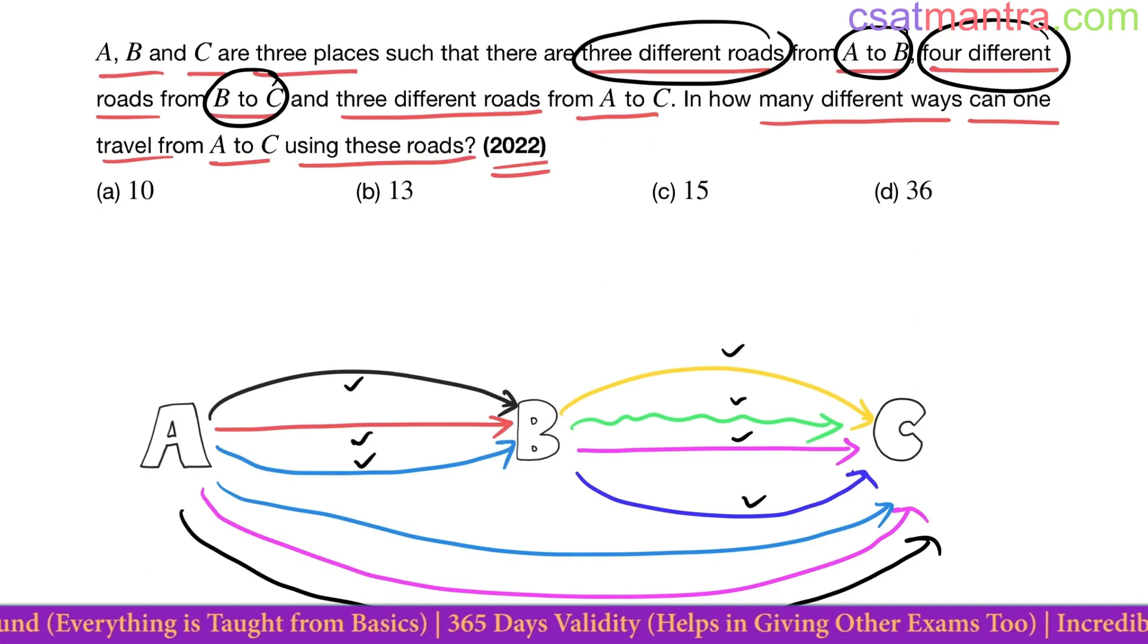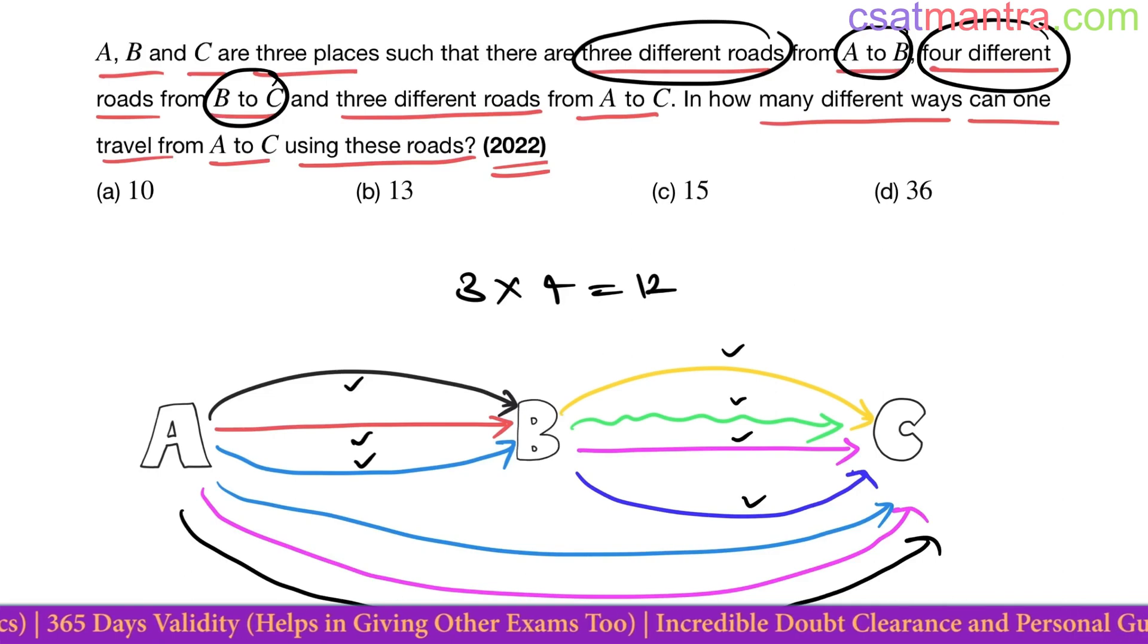From A to C, in how many ways can you travel? A to B is three ways, and B to C is four ways, so 12 ways. From A to C directly, there are three different roads. This way you can also reach C in three ways. 12 plus 3 equals 15.